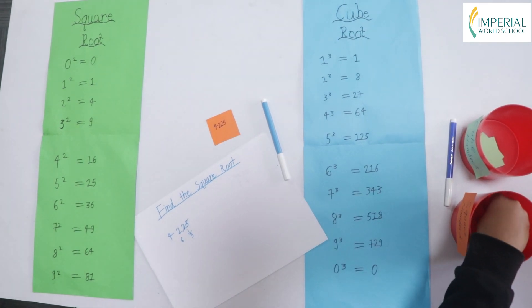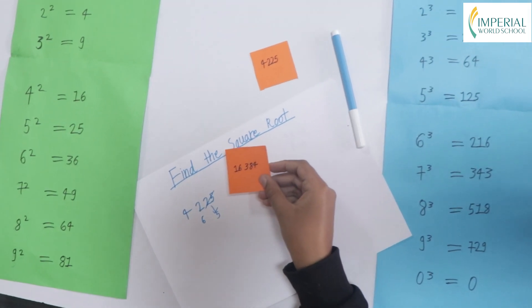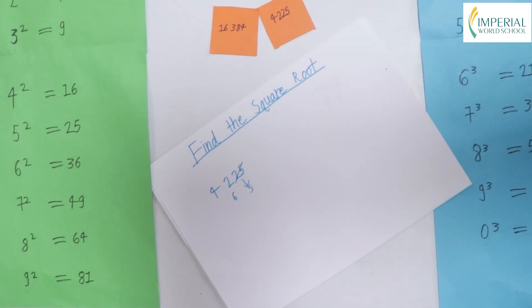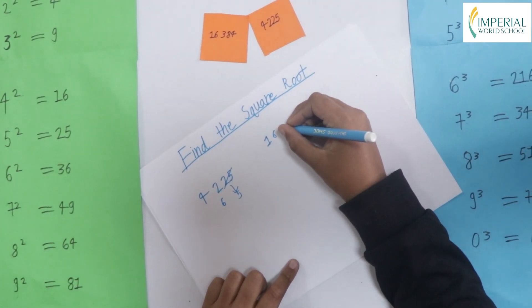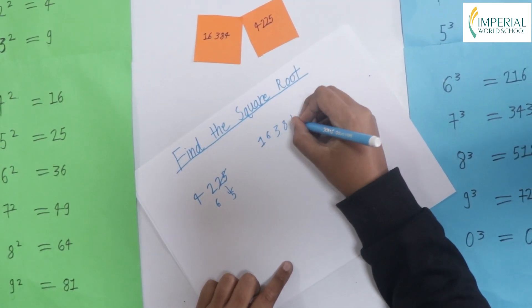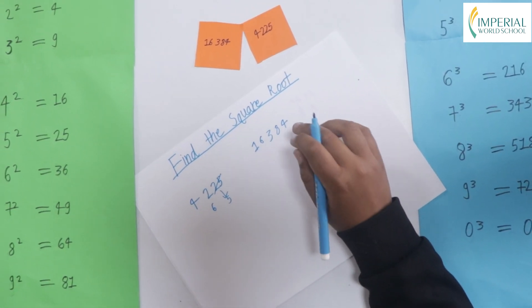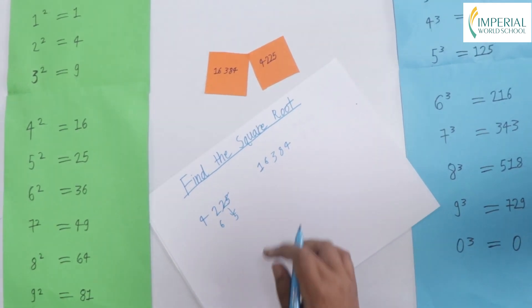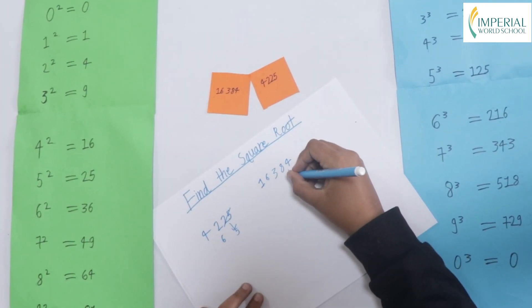Now let's take another number 16384. So to find that first we have to write it. So first we take the last number 4. Now this is a little tricky because 2 and 8 both have 4 in the last numbers. First we write both of them.